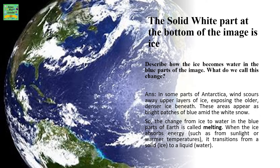The solid white part at the bottom of the image is ice. Describe how the ice becomes water in the blue parts of the image. What do we call this change? In some parts of Antarctica, the wind takes away the upper layers of ice, exposing the older, denser ice beneath the first layer. These areas appear as bright patches of blue between the white snow.